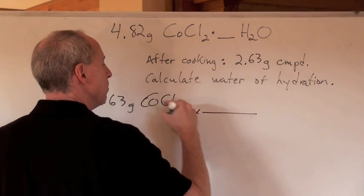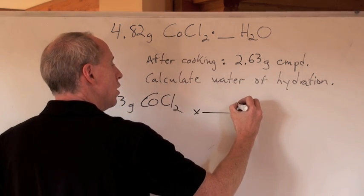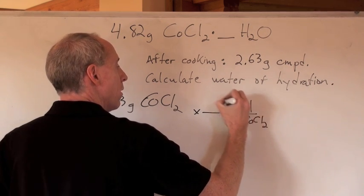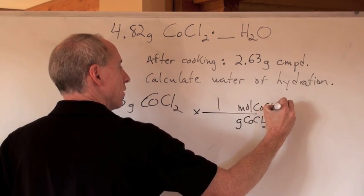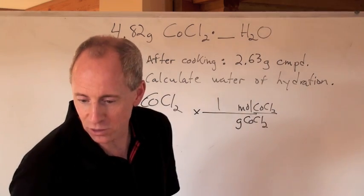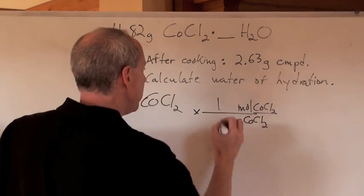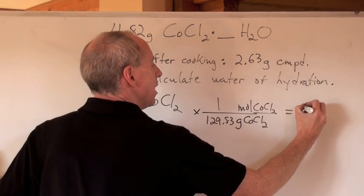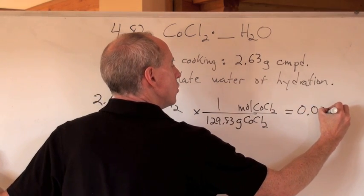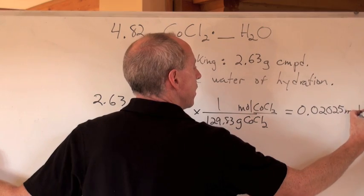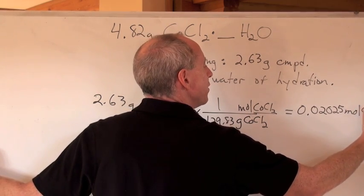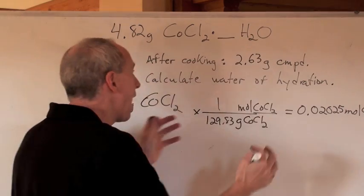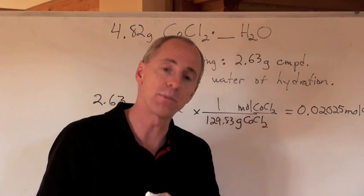If I take the molar mass of that chemical, which is going to be a number in grams of CoCl2 per 1 mole of CoCl2, and that molar mass is 129.83 grams per mole, I actually get 0.02025 moles of CoCl2. That's the number of moles of that that I have after I evaporate the water.